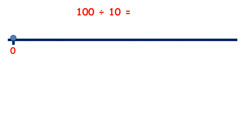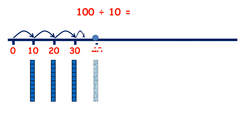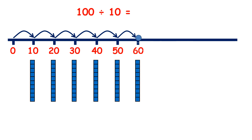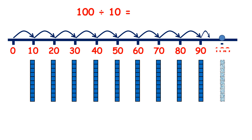Now what is 100 divided by 10? Well, 10 tens make 100, so our answer is going to be 10. And we can check that because if we count up in 10s until we get to 100 — 10, 20, 30, 40, 50, 60, 70, 80, 90, 100 — we've made 10 jumps of 10. So 100 divided by 10 is 10.